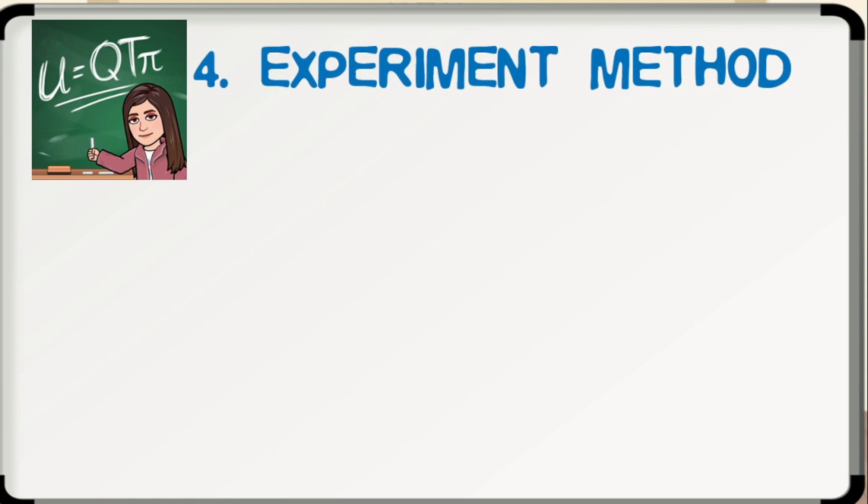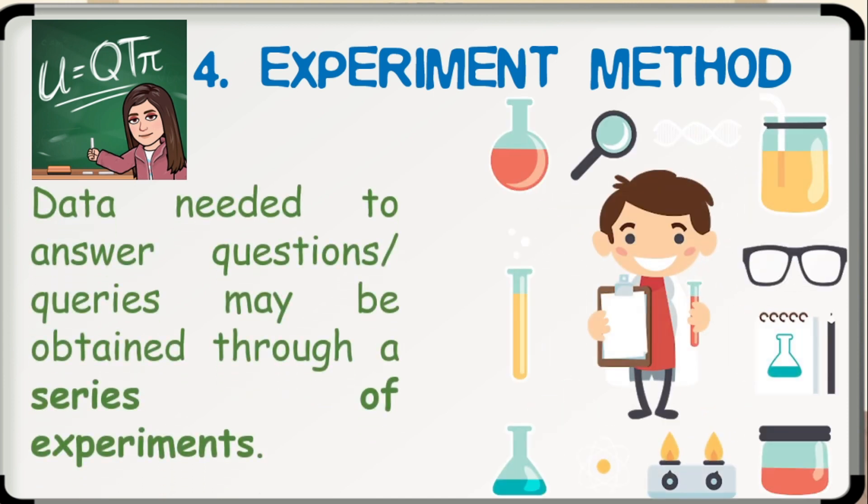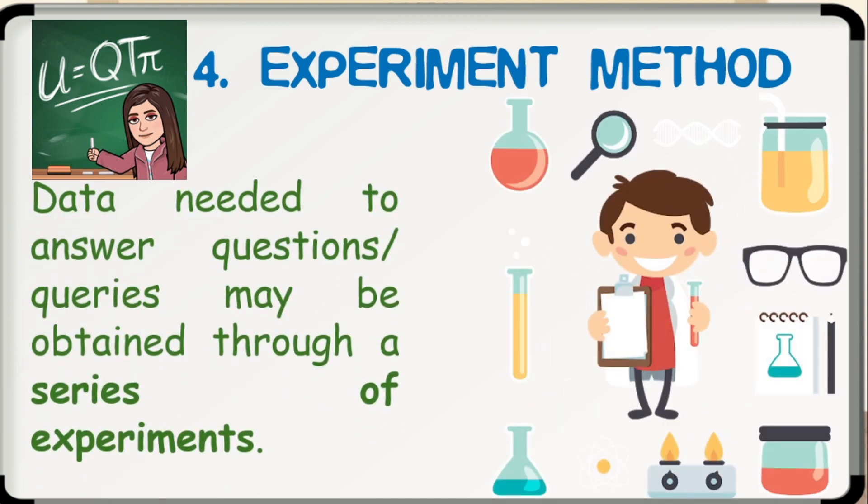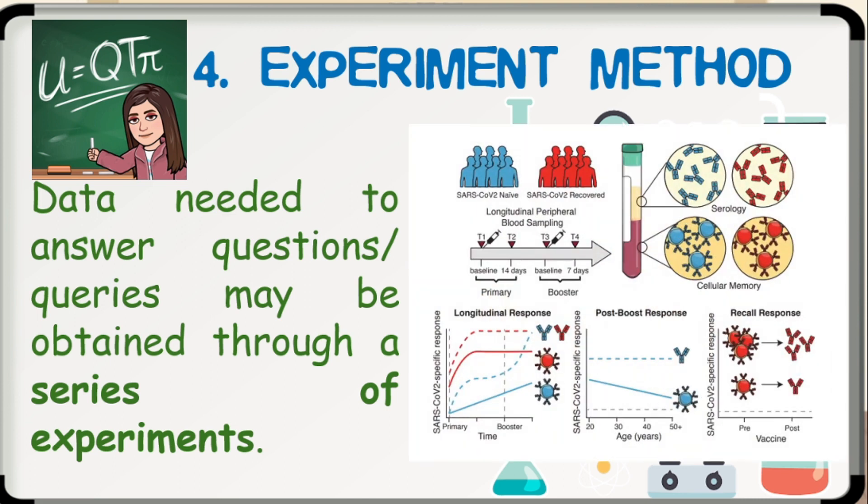And lastly, for primary sources of collection of data, we have experiment method. Data needed to answer questions or queries may be obtained through a series of experiments. Scientific researchers like physicists and chemists make use of this method. For this example, we can have an experiment of trying to produce different vaccines to combat a certain virus.